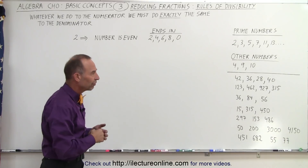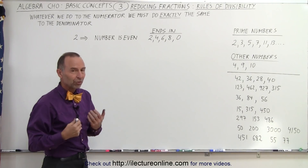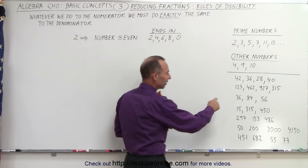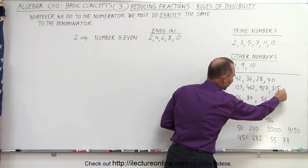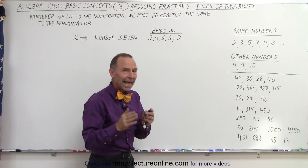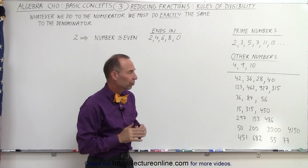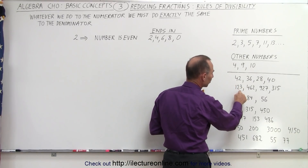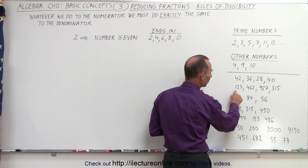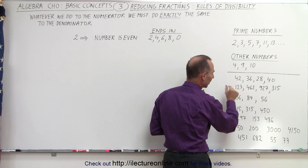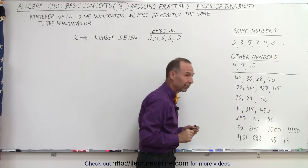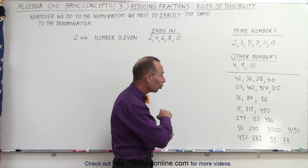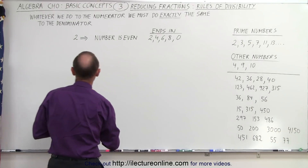To see if a number is divisible by 3, that's a little bit more tricky. What we need to do — and here are examples of numbers that are divisible by 3 — we need to add the digits of the numbers together. So for example, 1 plus 2 plus 3 equals 6. If that sum is divisible by 3, then the whole number is divisible by 3.